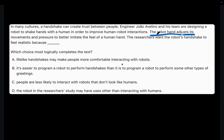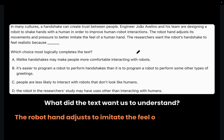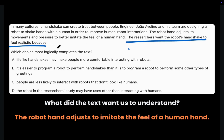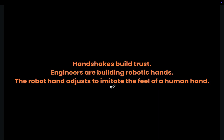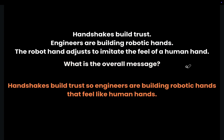The robot hand adjusts its movement and pressure to better imitate the feel of a human hand. What did the text want us to understand? The text wanted us to understand that the robot hand adjusts to copy or imitate the feel of a human hand. Before we read that last line connected to the blank, ask yourself: what is the overall message that the text wanted me to understand? The text wanted us to understand that handshakes build trust, so engineers are building robotic hands that feel like human hands.